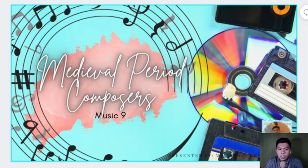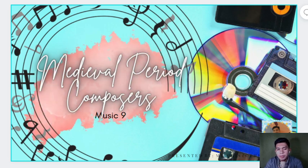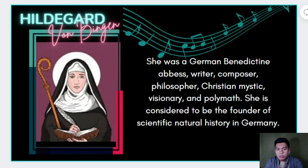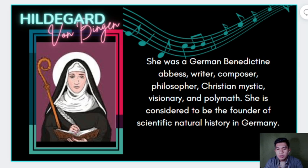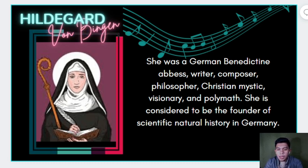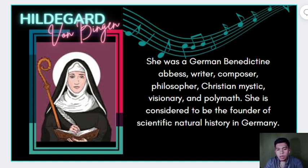Let's proceed to the last part of our discussion — the medieval period composers. We have five major composers to discuss. The first one is St. Hildegard von Bingen. She was a German Benedictine abbess, writer, composer, philosopher, Christian mystic, visionary, and polymath. She was considered to be the founder of scientific natural history in Germany.